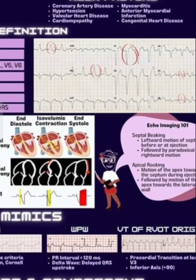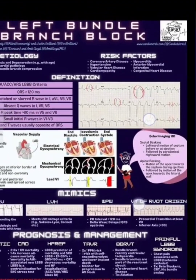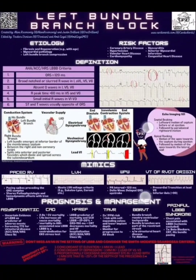Risk factors for left bundle branch block include coronary artery disease, hypertension, valvular heart disease, cardiomyopathy, myocarditis, anterior MI, and congenital heart disease. This concludes the session on left bundle branch block.